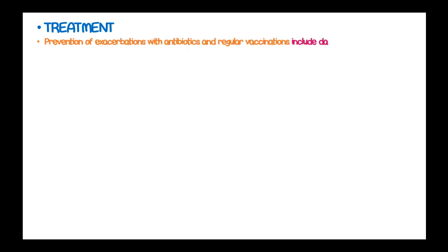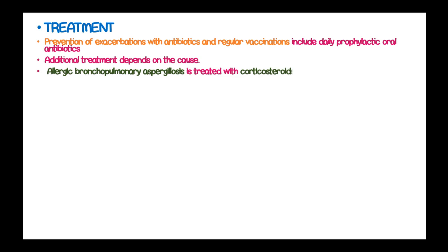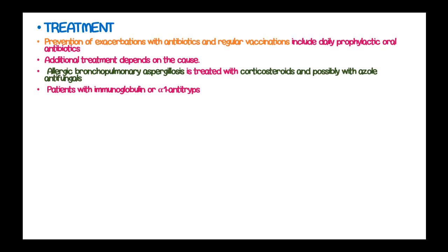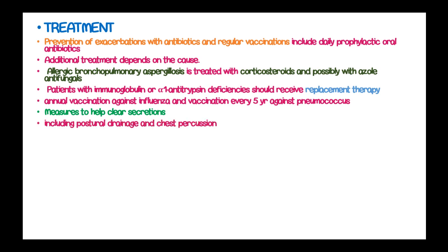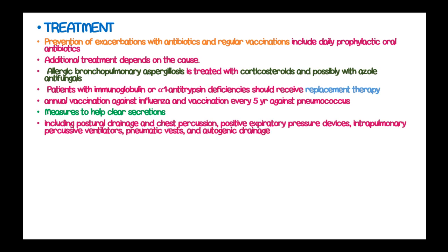Treatment of bronchiectasis includes prevention of exacerbations with antibiotics and regular vaccination. Additional treatment depends on the cause — allergic bronchopulmonary aspergillosis is treated with corticosteroids and possibly an azole antifungal. Patients with immunoglobulin or alpha-1 antitrypsin deficiency should receive replacement therapy. Annual vaccination against Haemophilus influenzae and vaccination every five years against pneumococcus is indicated. Measures to help clear secretions include postural drainage, chest percussion, positive expiratory pressure devices, extrapulmonary percussive ventilators, pneumatic vests, and autogenic drainage.